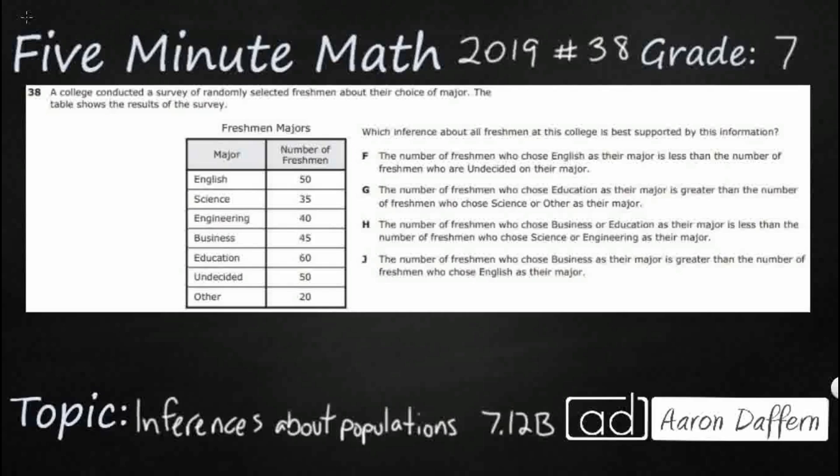Hello and welcome to 5-Minute Math. Today we are looking at the seventh grade concept about inferences about populations. This is standard 7.12b in the great state of Texas and we are using item number 38 of the 2019 released STAR test. If you have not done so already, please go ahead and take a moment to pause the video, work this problem out on your own, unpause it, and we will look at our answers together.